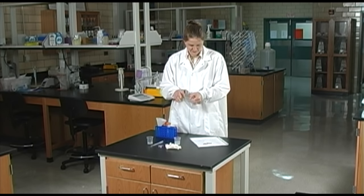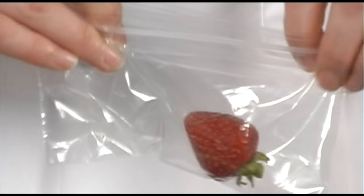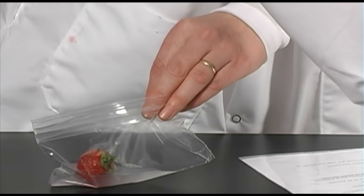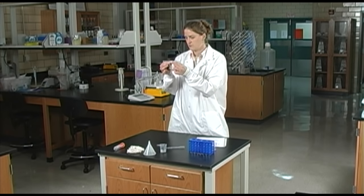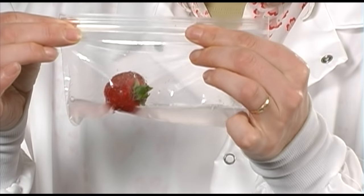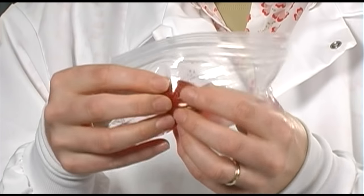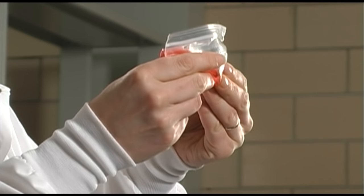First, place the strawberry into the Ziploc bag. Then pour 20 milliliters of the extraction solution into the bag. Close and seal the bag, removing as much air as possible. Use your hands to gently mash the strawberry in the extraction solution for five minutes.